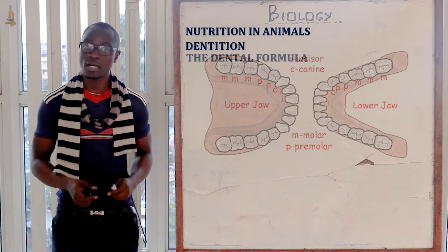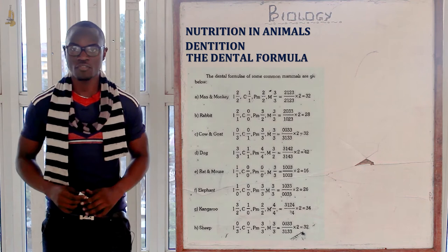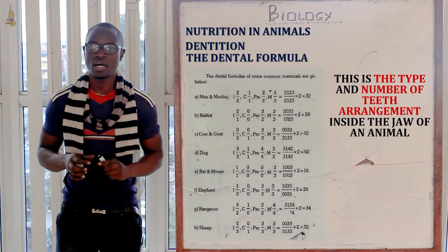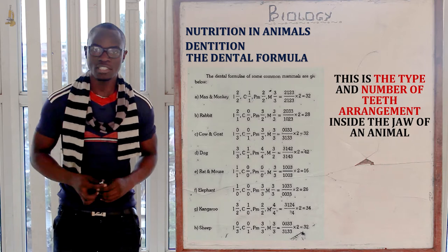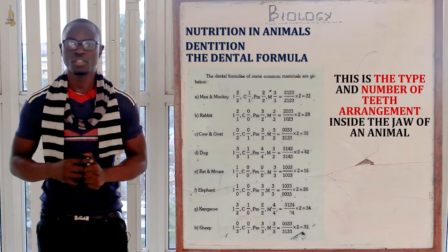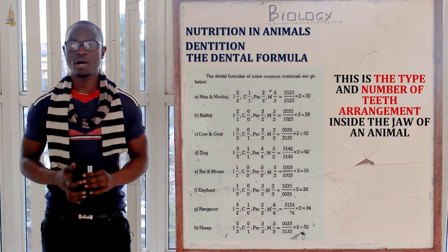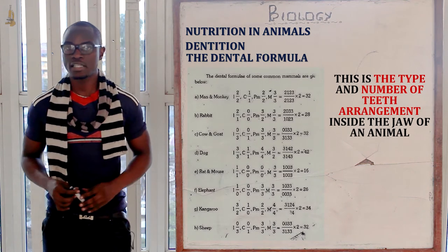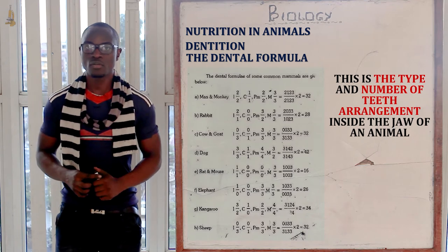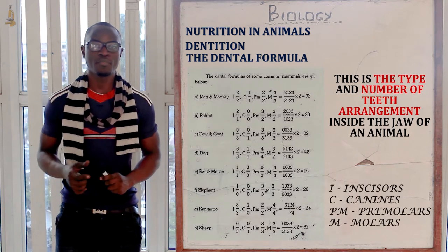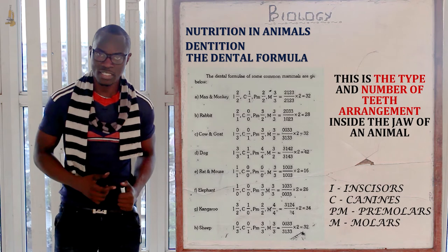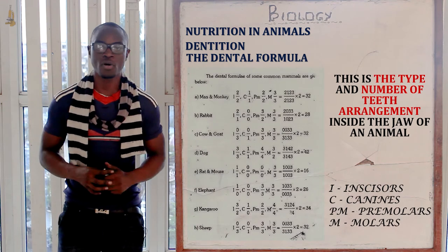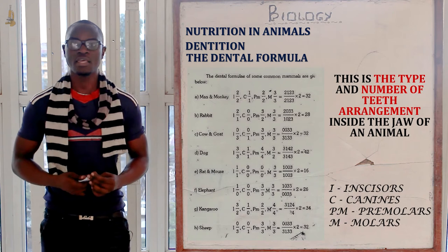The dental formula accompanies dentition and describes the number and type of teeth as arranged inside the mammalian jaw. It shows the number of each type of tooth in half of the upper and lower jaw. The formula uses: I for incisors, C for canine, PM for premolars, and M for molars.